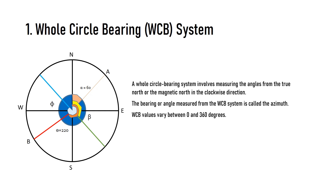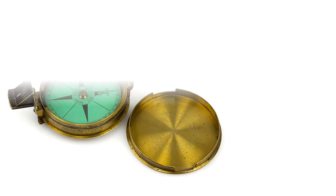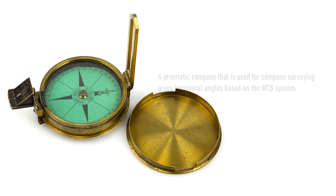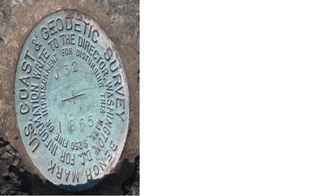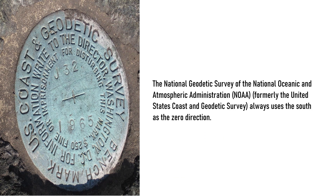Hence, WCB values vary between 0 and 360 degrees. A prismatic compass used for compass surveying gives horizontal angles based on the WCB system. In plane surveying, azimuths are measured from the north, while the National Geodetic Survey of NOAA (formerly the United States Coast and Geodetic Survey) always uses the south as the zero direction.